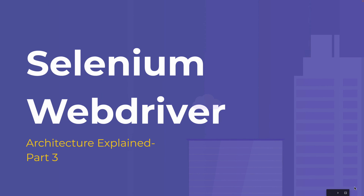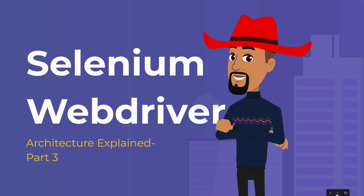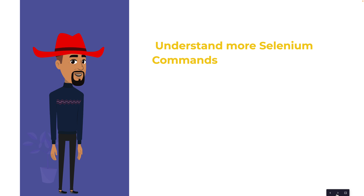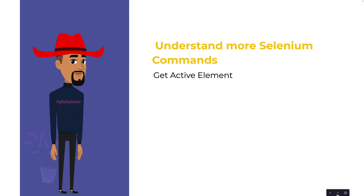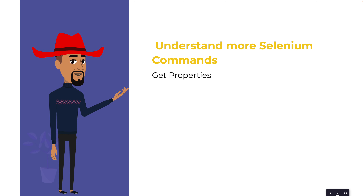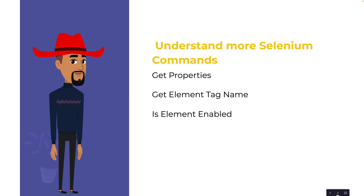Hello everyone, my name is Veer, and this is the third part of the Selenium WebDriver architecture explanation series. In this video, we are going to understand more Selenium commands and how those commands internally work. We'll focus on get active element, checking whether an element is selected, get text, get attribute, get properties, get element tag name, whether an element is enabled or disabled, get page source, and get all cookies.